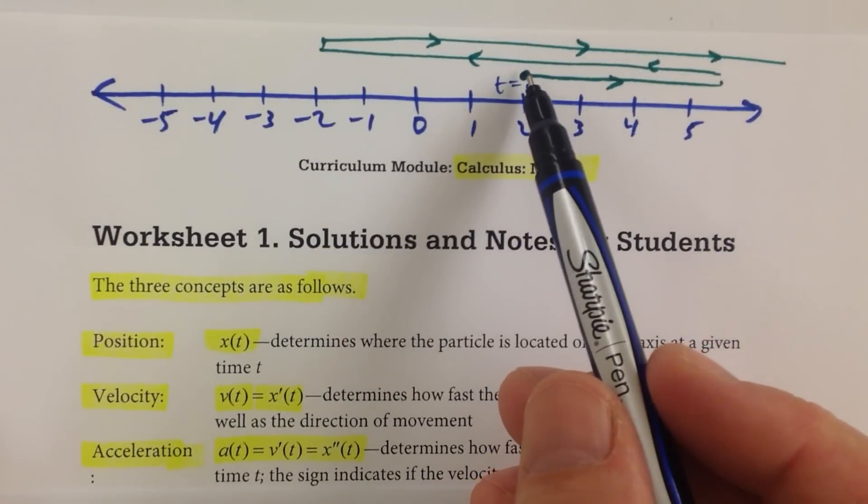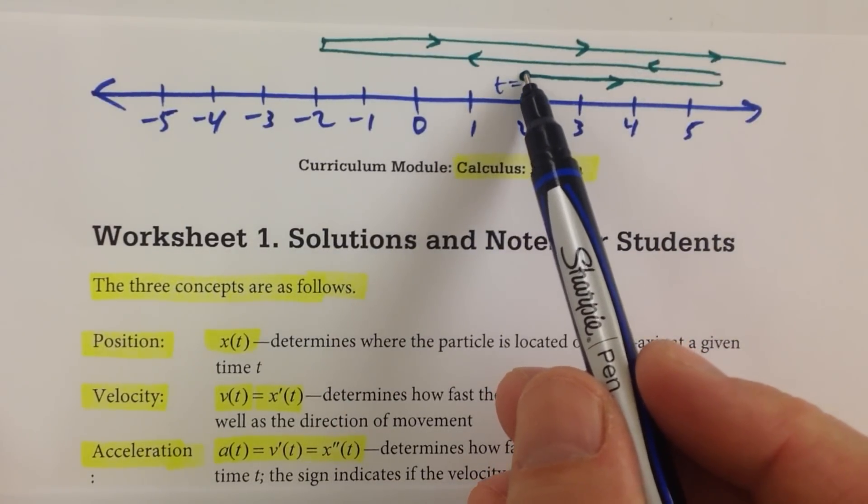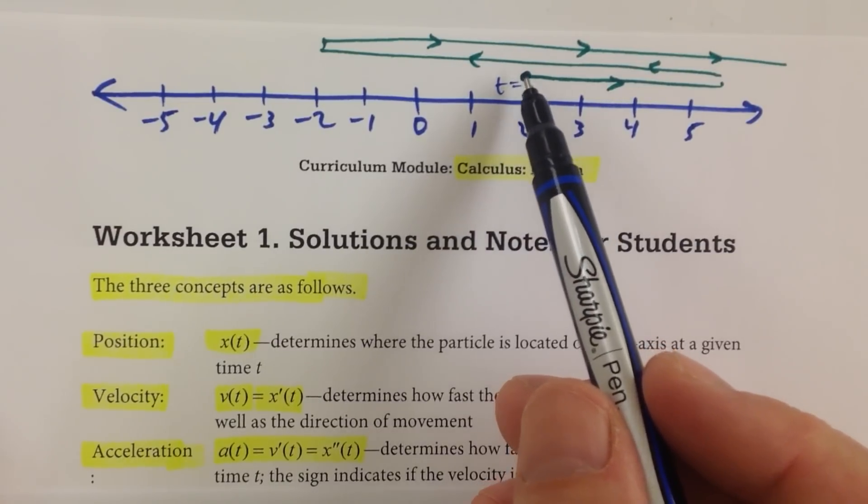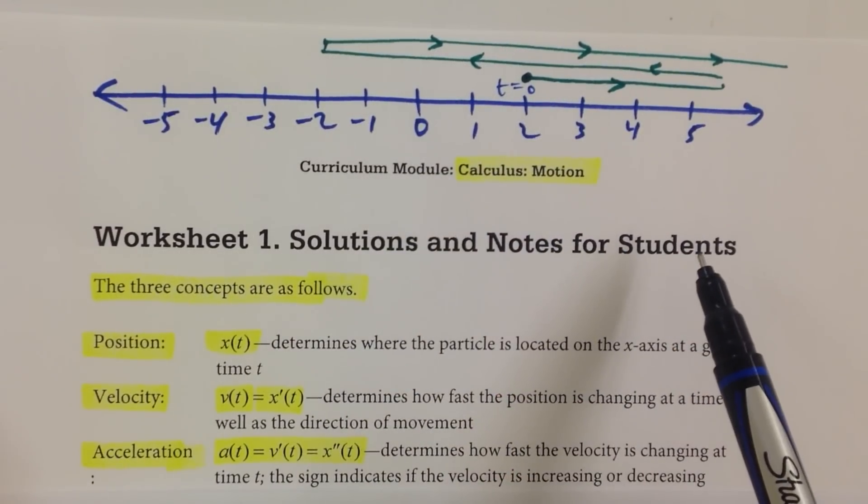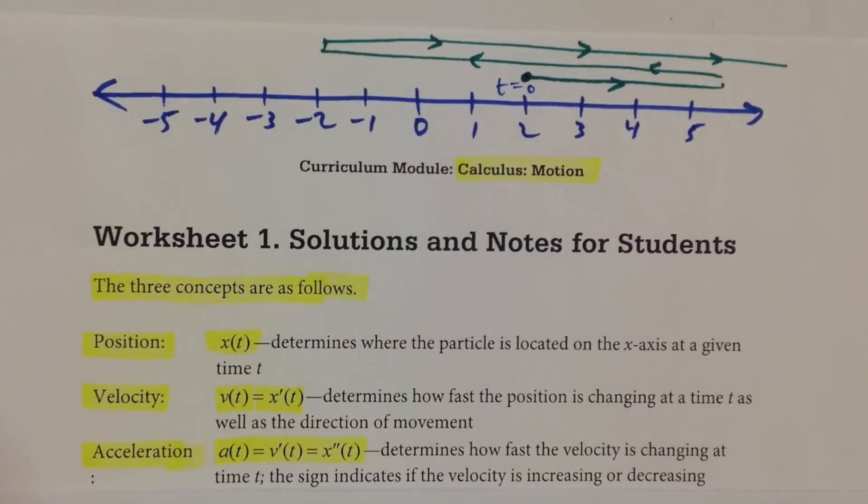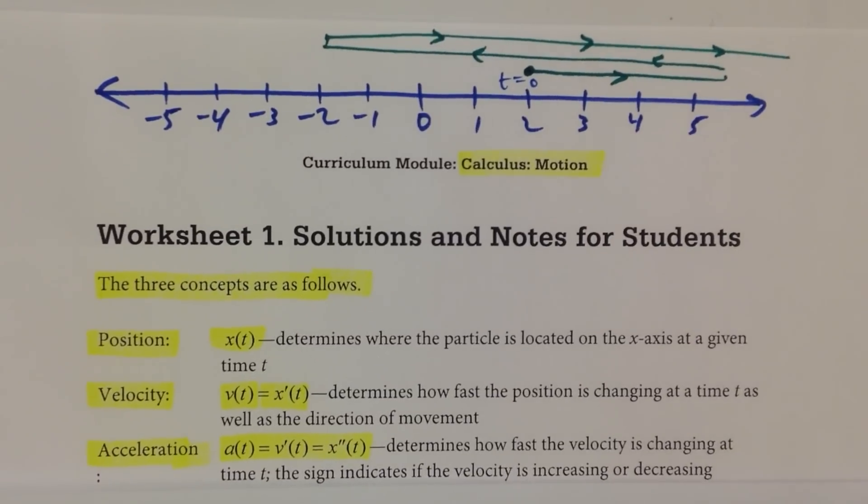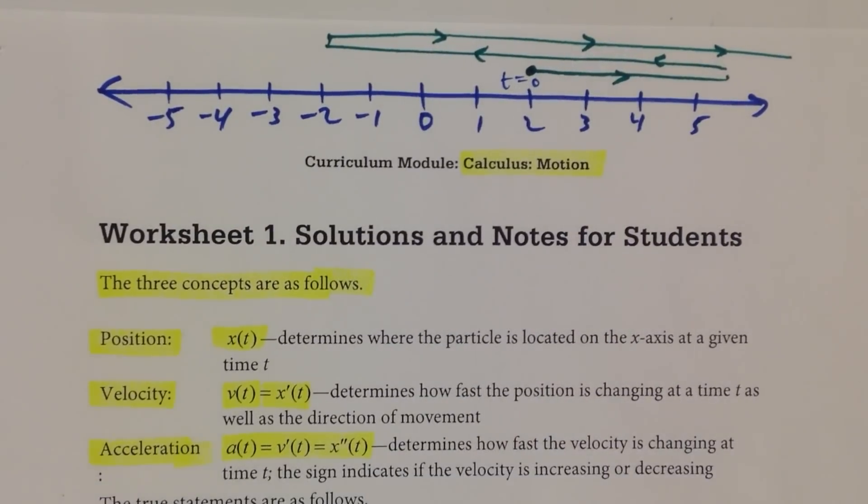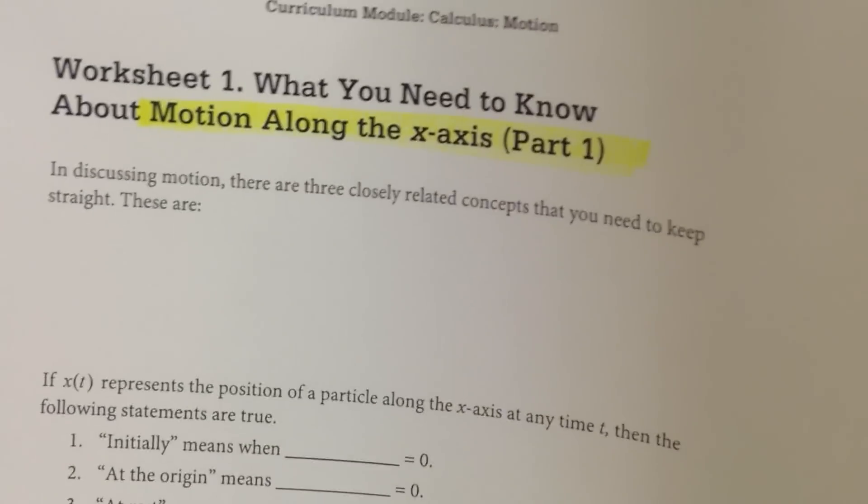And three things, like I said, are going to be happening at any one time: the position, the velocity at that time, and also the acceleration. So those are the three concepts we're going to be covering. All right, so let's go ahead and start filling out this sheet here so you guys can get a good idea of the vocabulary, which is really important, the vocabulary.